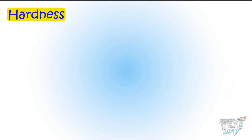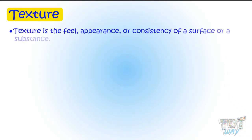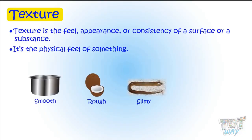Now let's learn another property of matter. It is texture. Texture is the feel, appearance, or consistency of a surface or a substance. It's the physical feel of something. It can be smooth, rough, slimy, and spiky, or even something in between.